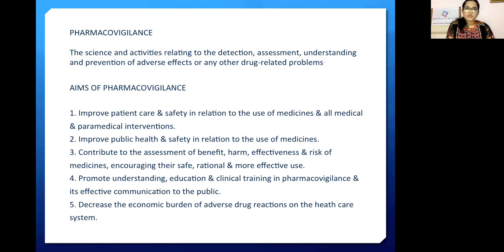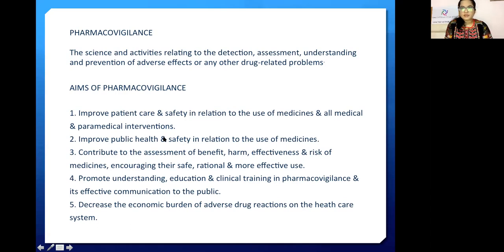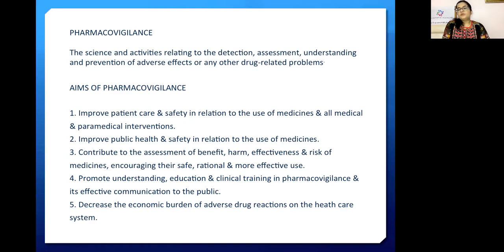The aims of pharmacovigilance are to improve patient care and safety in relationship to the use of medicines and all medical and paramedical interventions, improve public health and safety in relationship to the use of medicine, contribute to the assessment of benefit, harm, effectiveness, and risk of medicines, encouraging their safe, rational, and more effective use. The most important aim of pharmacovigilance is for the drug that is in the market to be safe and effective.